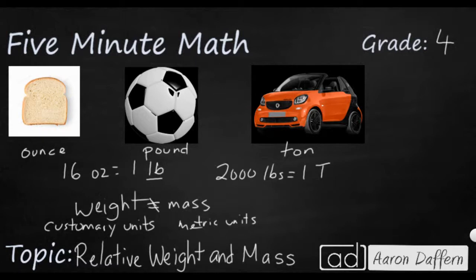So we have an ounce. 16 ounces make a pound. 2,000 pounds make a ton. That is all weight. Now let's look at mass.